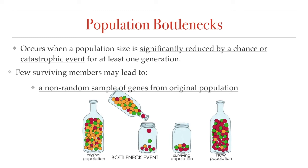But it could also be caused by human actions, like overhunting of a population that significantly reduces the numbers. And the reason that it is called the bottleneck is because it can be described with the analogy of a bottle that is filled with different colored marbles. The marbles represent different individuals in a population and the variety of colors their genetic variation. If a catastrophic or bottleneck event occurs, only a few random individuals survive,